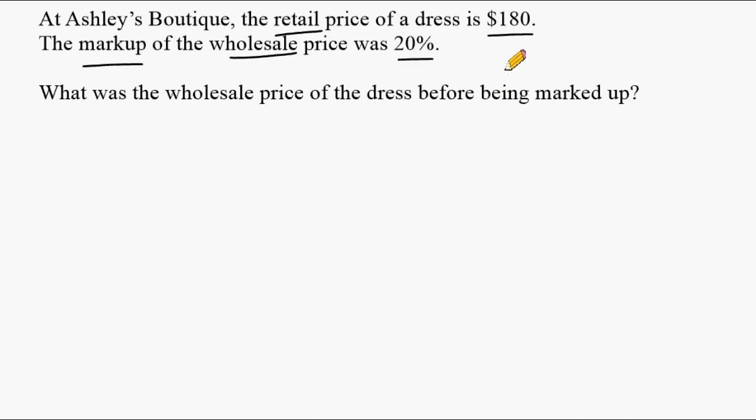So they give us what the price is going to be that the consumer will have to pay or the retail price. And they give us what the markup was. So we have to work backwards to figure out what was the price that the boutique obtained the dress for? What was the wholesale price of that dress?